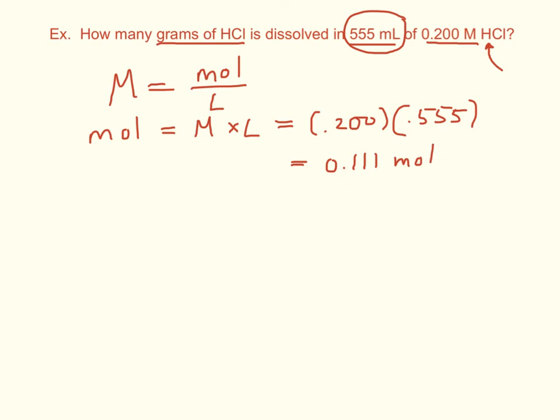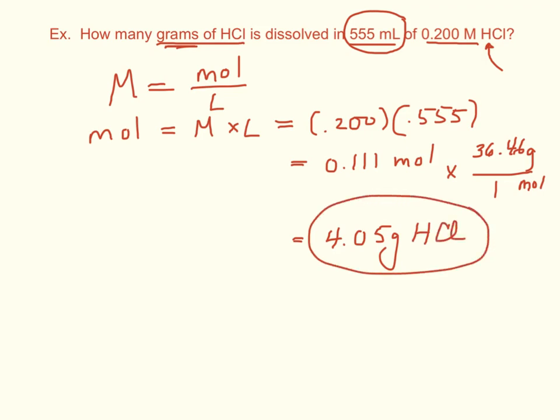And we're not quite done because that asked for grams. So what we'll do is we'll change moles to grams. And one mole of HCl, if you look at the molar mass of 1 plus 35.55, you're going to get 36.46. And we just multiply that out, and we get 4.05 grams of HCl. That would be the amount of HCl dissolved to make that solution. So those are some simple molarity calculations, and that's it.